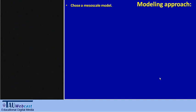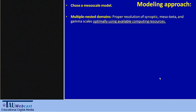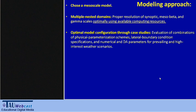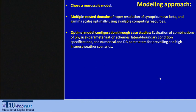Our modeling approach in this project starts with choosing a mesoscale model and using multiple nested domains to go from the synoptic to the mesoscale, optimally using our computational resources. Models also have many configurations and different options — different microphysics, boundary layer parameterizations, and so on. We don't just take a model off the shelf; in this project we are evaluating combinations of these different options through case studies of interesting weather phenomena to define the best choice that can better simulate all scenarios of interest.